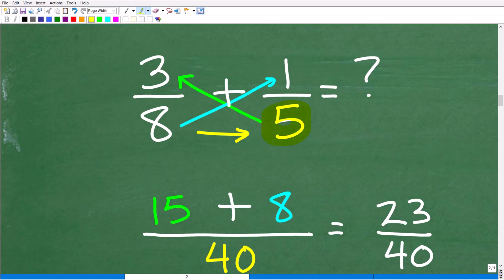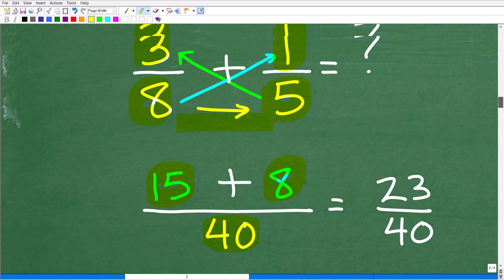You're going to start in the bottom right, this denominator, and you're going to multiply to this number here. This has to be in this exact order. Start from the bottom right, you're going to go up. So 5 times 3 is 15. Now you're going to go from the bottom left and go across this diagonal, 8 times 1. So 8 times 1 is 8. And then lastly, you're going to multiply across the denominators. 8 times 5 is 40. So this is basically it.